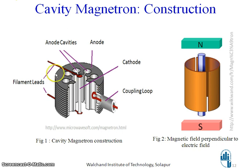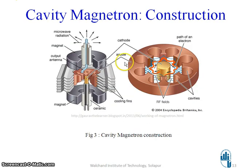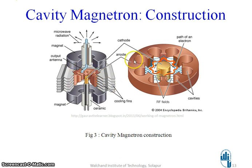A perpendicular magnetic field is applied to this structure. In this direction there will be electric field, and in the perpendicular direction there will be magnetic field — so electric field and magnetic field are perpendicular to each other, confirming it is a cross field tube. At the center is the cathode, surrounded by the anode cavities. Output is taken from one of the cavities. The space between anode and cathode is called the interaction space.